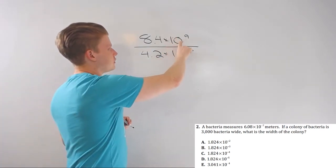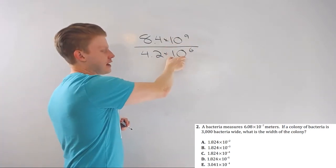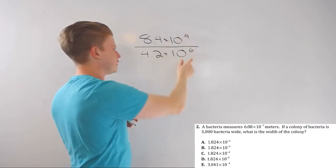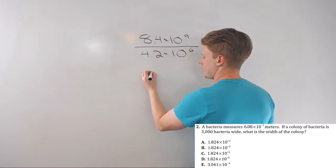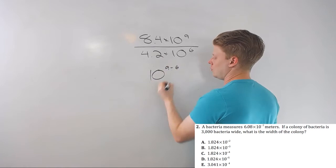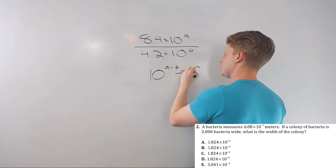So, 10 to the ninth, 10 to the sixth, I'm dividing. Same base, 10, different exponents. Dividing, that means I subtract. So, I could say in terms of the exponent, this is 10 to the ninth minus six, or 10 to the third.